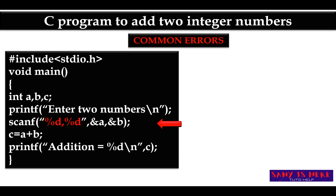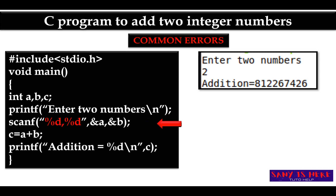While reading two integers in scanf, you might write two %d format specifiers with a comma between them inside the format string — that is not correct syntax. This causes an error and the second number is not read properly, printing an unknown value instead.